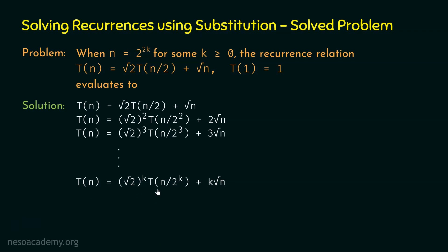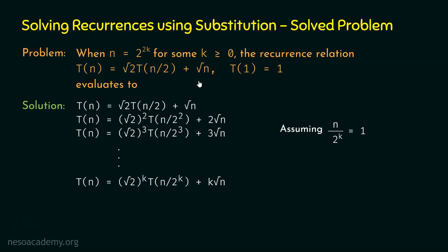This is T(n) in terms of T(n/2^k). We assume n/2^k = 1 is the base case, meaning T(n/2^k) = T(1). From n/2^k = 1 we get n = 2^k, and we need to find k in terms of n to express T(n) in closed form.